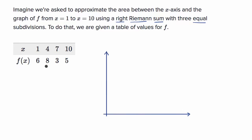We are going from x equals one to x equals 10, so let me mark off one through ten on the x-axis. They give us the value of f of x at x equals one, two, three, four, seven, five, six, seven, eight, nine, and ten.